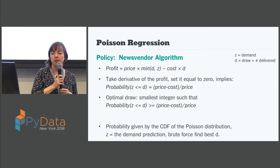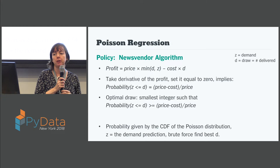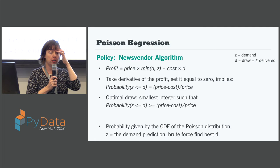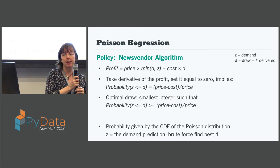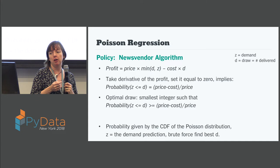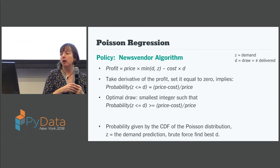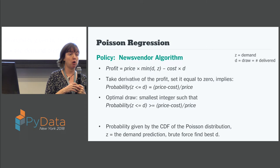That is how we do the predictions half of the Poisson regression, and given that information and the fitted thetas, we can get our predicted demand in a store for any given day. The next piece is how many newspapers to actually send — the policy function — and it turns out this is a well-known problem in optimization called the newsvendor algorithm. Basically what you're doing is just optimizing for profit, and this is an analytical solution so we don't need to do any machine learning in this part at all. Also, I realize I never told you that the jargon term for how many papers you deliver is called draw.